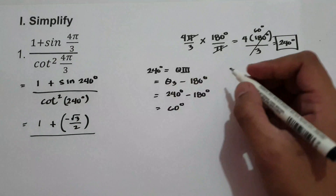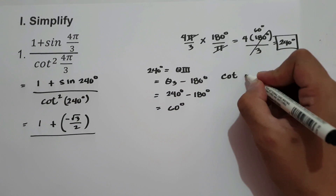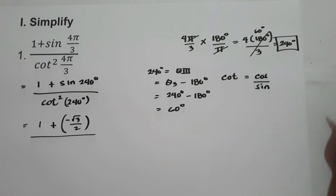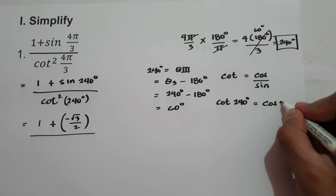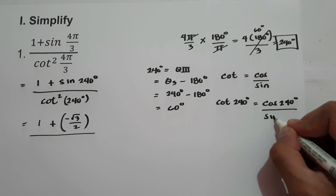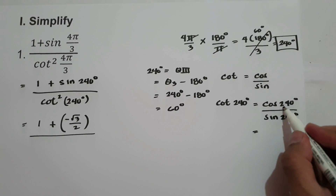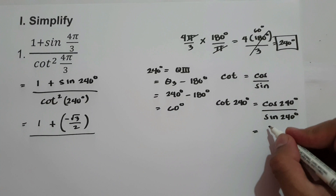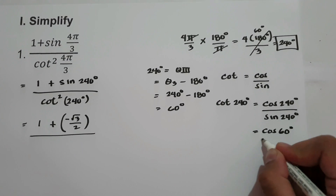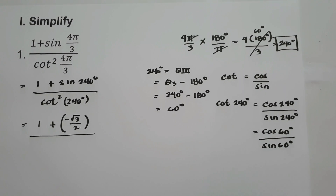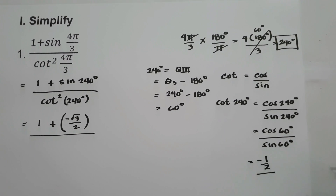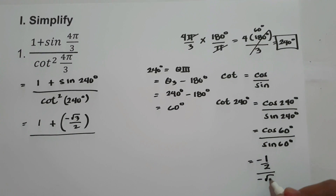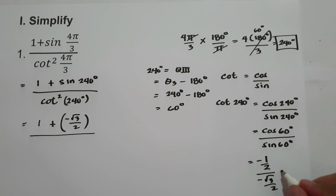All over cotangent squared. We know that cotangent is cosine over sine. So cotangent 240 degrees is cosine 240 degrees over sine 240 degrees. The reference angle is 60 degrees, so we have cosine 60 degrees over sine 60 degrees. Cosine 60 degrees in quadrant 3 is negative 1/2, and sine 60 degrees in quadrant 3 is negative square root of 3 over 2. Negative divided by negative is positive, and canceling 2 gives us 1 over square root of 3.